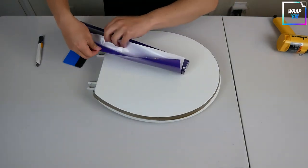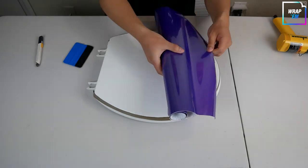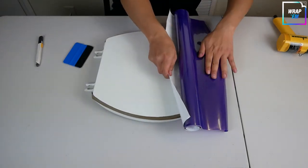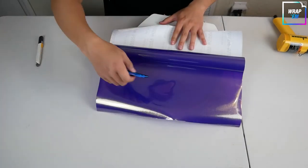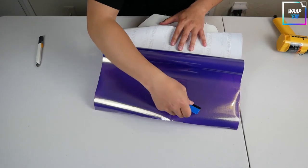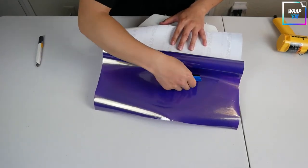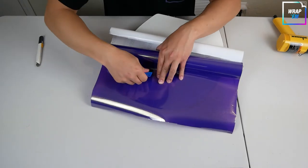Peel away the paper backing just a little bit and put it on the top surface. We are going to wrap the surface just a little bit at a time by squeegeeing and pulling the paper backing simultaneously.